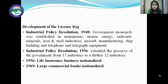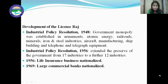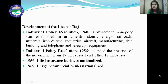Then came the Industrial Policy Resolution 1956, where the preserve of the government expanded from 17 industries to a further 12 industries. In 1956, 12 more industries were added to the government sector. In 1956, the life insurance business was also nationalized — life insurance industry came under government control, and no private company could enter the insurance business. In 1969, 14 private commercial banks were nationalized and came under government control.